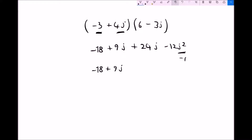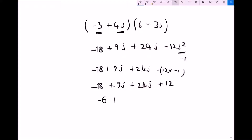Recall that j squared is minus 1, so minus 12j squared becomes plus 12. Now we collect like terms: minus 18 plus 12 is minus 6, and 9j plus 24j is 33j. So our result is minus 6 plus 33j.